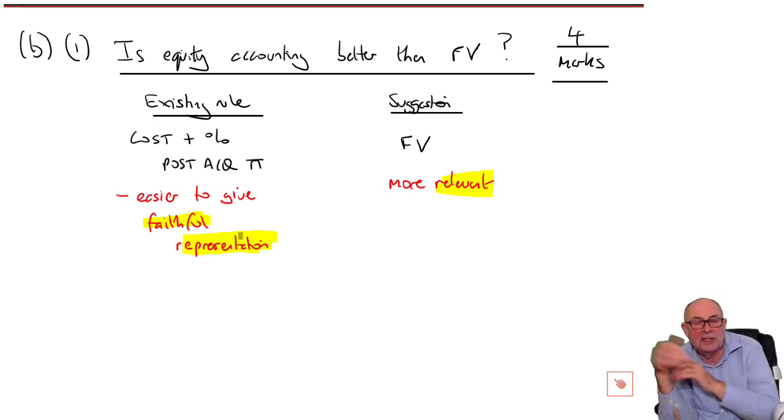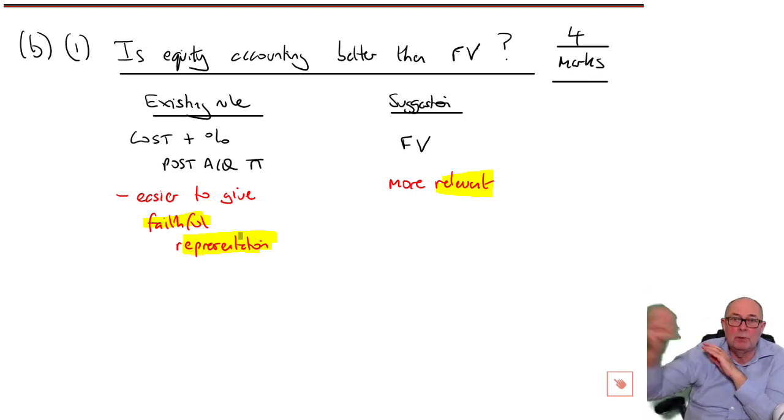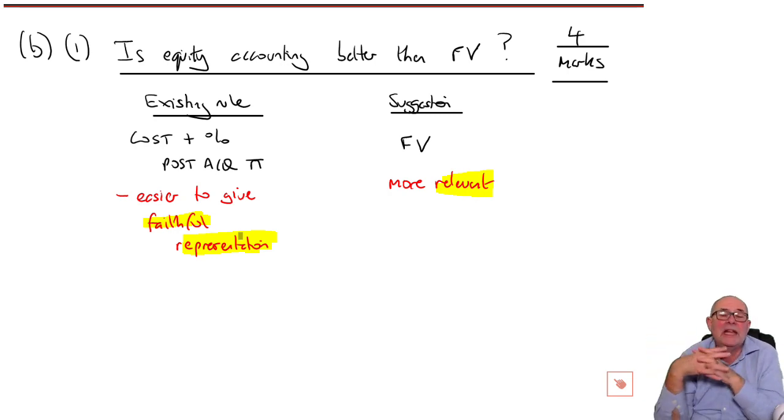But the trouble with fair value is, with any company, if it's not listed, how are you supposed to get the fair value? Apart from a passing gypsy. So with this one, it's easier on the left to give faithful representation. You can get a more reliable measure because you know what the cost was. You know what post-acquisition profits are. So it's the old chestnut about cost versus valuation model. I think we could have a debate about that without too much difficulty. Remember, when you're revising the framework, make sure you know the characteristics of financial information.